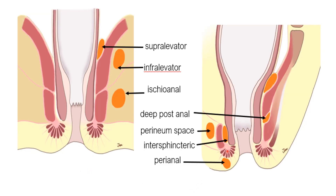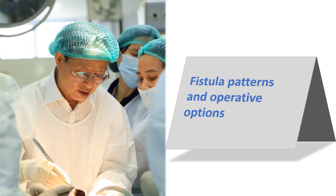Abscesses pertaining to different spaces: between the two sphincters is an intersphincteric abscess; in the perianal region is a perianal abscess; anteriorly is a perineal abscess; posteriorly is a deep post-anal abscess; above the levator is supralevator; below the levator is infralevator; and between the transverse septum fascia and ischioanal fossa fascia is an ischioanal fossa abscess. Different fistula patterns and their operative options — concepts given by Dr. Arun Rajnashukal — are seen in the next slides.